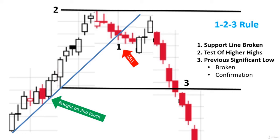Number three is where you look at where the previous significant low was. The previous significant low that approached the trend line is where you draw a line straight across — that'd be your number three. Once that's broken, then you have real definite confirmation that this is not just a temporary thing; it's a definite turnaround. In this example, you can see the support line was broken, and the highs had a little pullback and a little turnaround, but it never really tested that higher high. See how the highest point after the trend line never got up to number two, never broke through number two. If it had worked, it would have broken through at number two and then reestablished that strong trend after a temporary pullback.